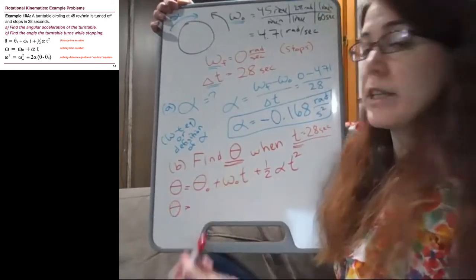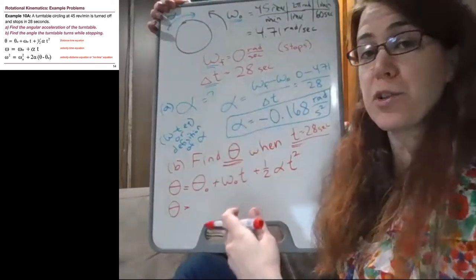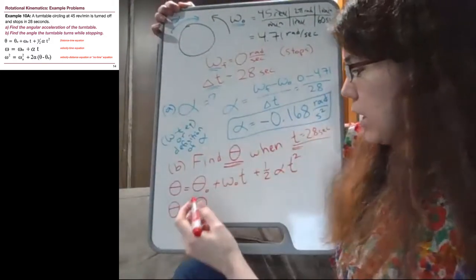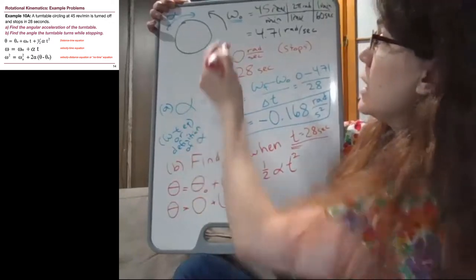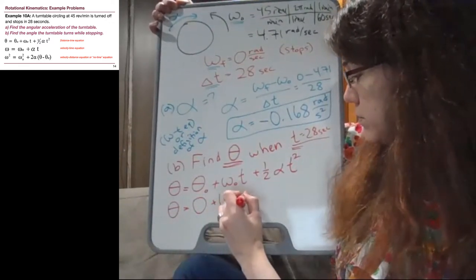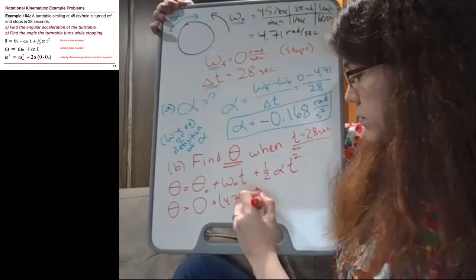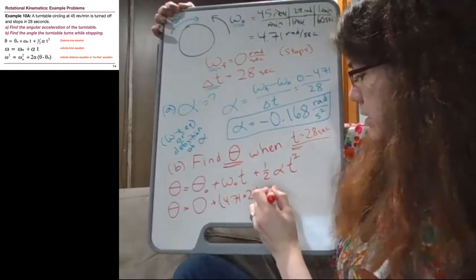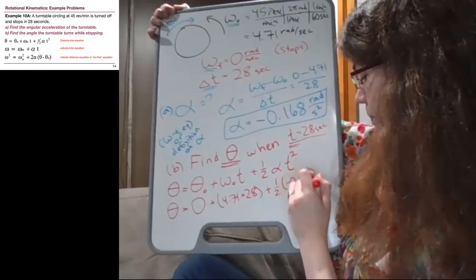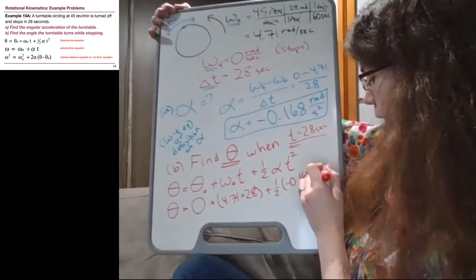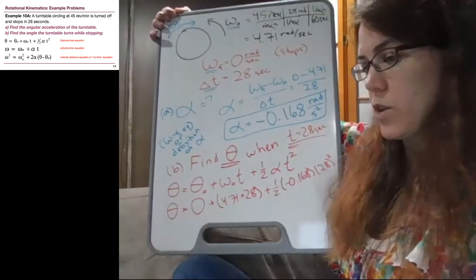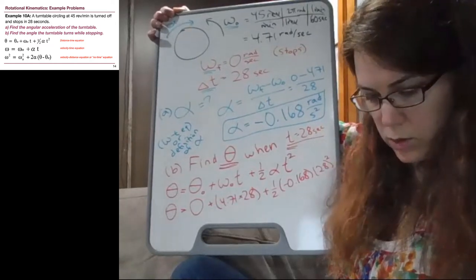And then we plug in numbers. So we have our initial angle. We're going to say the initial position is zero, because all we care is how far we've gone since we turned it off. The initial omega value is the 4.71. And time is 28 seconds. And then we have our negative 0.168 for alpha, and we have the 28 is squared. And so I will calculate this out.